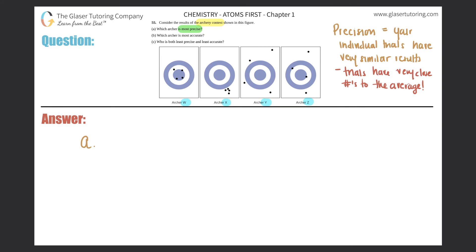This is a great example because I like to talk about a bullseye archery contest for precision and accuracy — I think it's the easiest way to see it. If an archer is going to be precise, the individual shooting the bow has to have very similar results. Their shots should be in the same proximity, very close to each other and very close to the average.